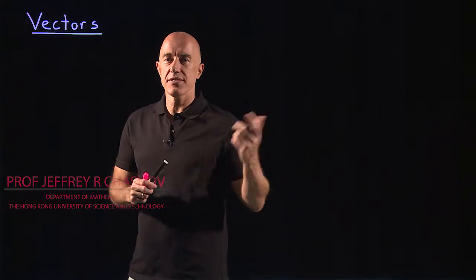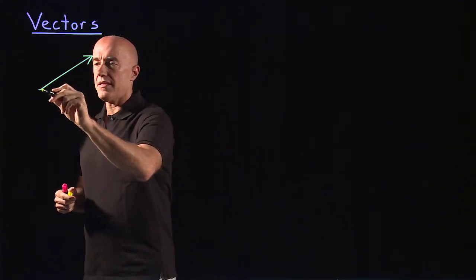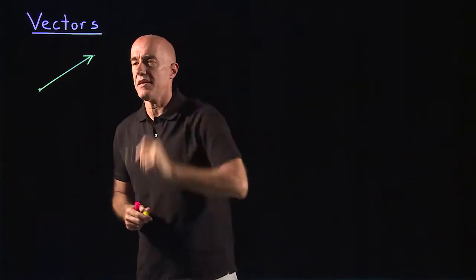You usually see vectors as arrows, a starting point and an ending point, which is the tip of the arrow.